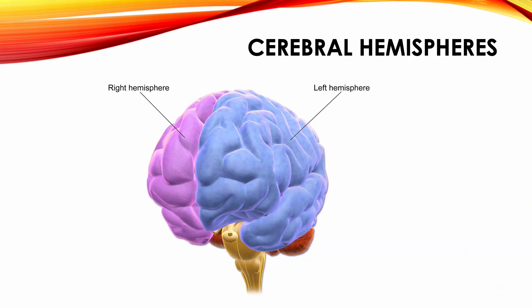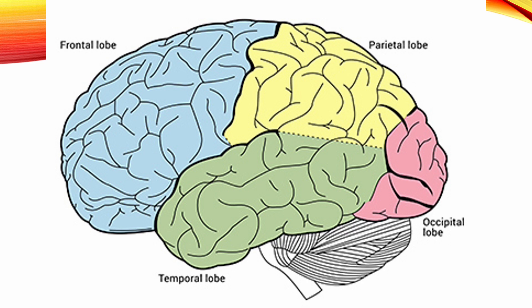There are two large paired cerebral hemispheres immediately below the skull cup. Each hemisphere is divided into four lobes: the frontal lobe, temporal lobe, parietal lobe, and occipital lobe. The lobes are divided from each other by gyri and sulci of the cerebral hemispheres.